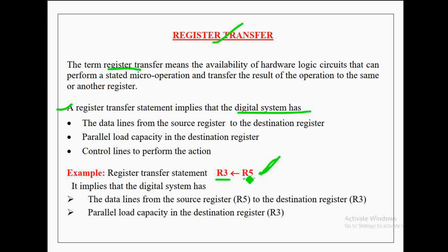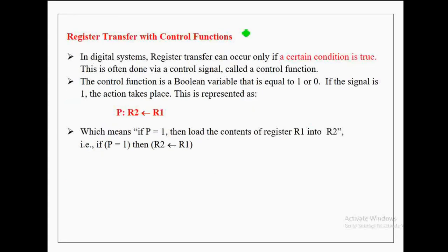This register transfer statement is the simplest form because no control variable is indicated. In general, every register transfer statement can take place only when a certain condition is true. In digital systems, register transfer can occur only if a certain condition is true, done via a control signal called the control function. The control function is a boolean variable equal to 1 or 0.